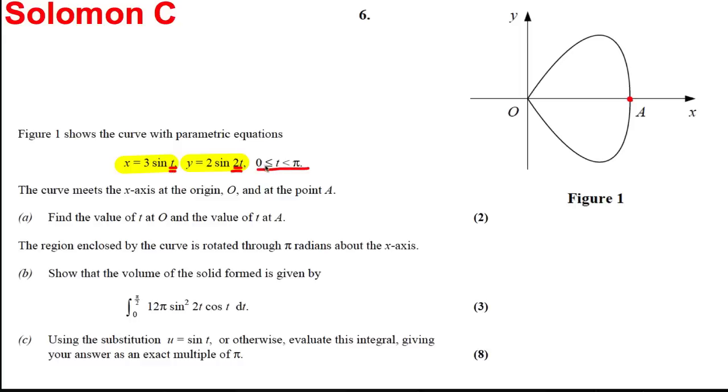The curve meets the x-axis at the origin and at point A. At the origin, you know for sure that x is 0 and y is 0. At point A, you know that y is 0 but you don't know anything about x.